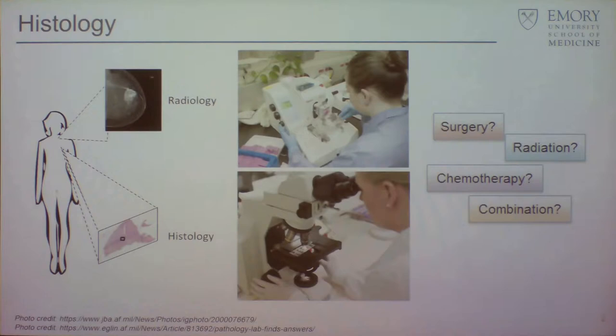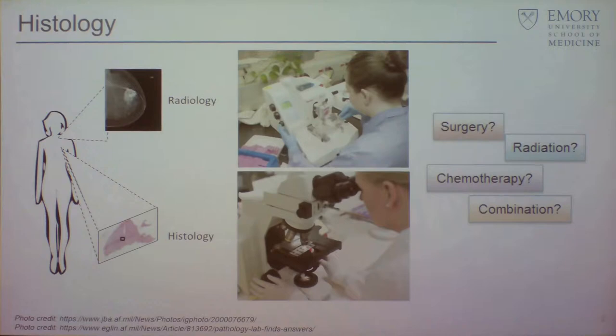There are two ways we primarily do imaging, which is the most objective way we can look at things in medicine. One is radiology — mammograms, CT, or whatever. The other is histology, which is taking either a needle biopsy, or when you remove the tumor itself, you look at it under the microscope and see what is going on.